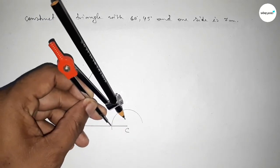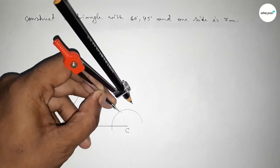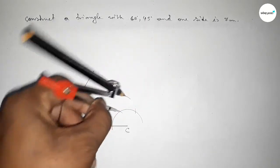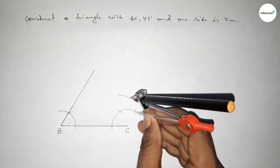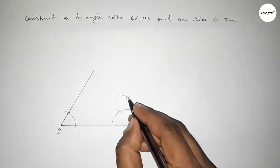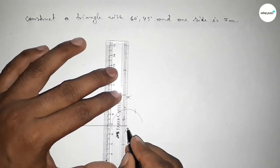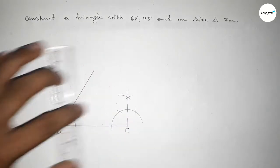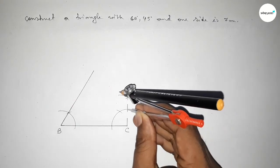Next, drawing the 45 degree angle at point C. Putting the compass at C and taking any length, drawing an arc. Then putting the compass with the same length and cutting, and again cutting here, drawing another arc and cutting with the same length, so both lines intersect at a point. Joining this to get a 90 degree angle first.